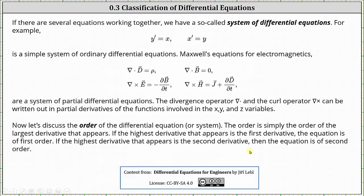If there are several equations working together, or more than one, we have a system of differential equations. For example, y prime equals x and x prime equals y is a simple system of ordinary differential equations. Maxwell's equations for electromagnetics shown below are a system of partial differential equations.